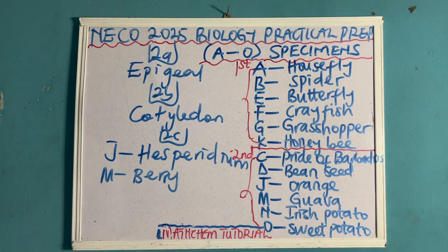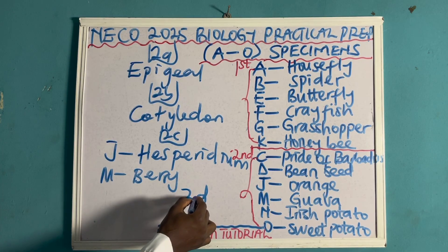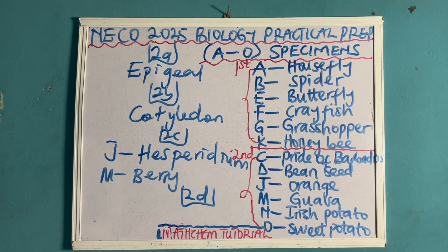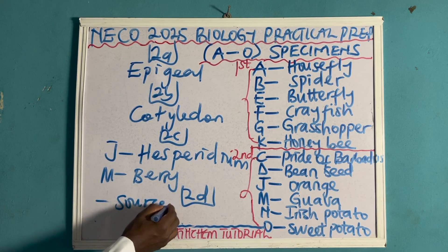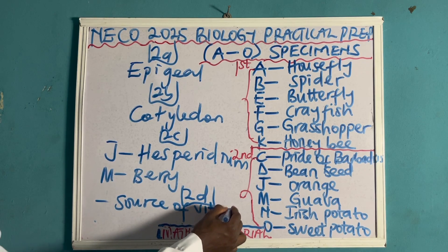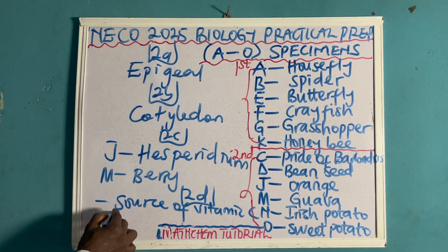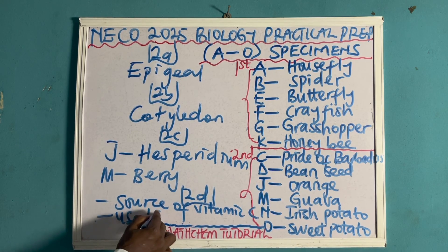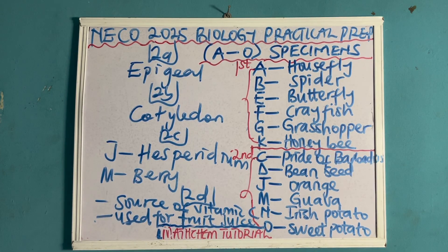Another question they can ask — let me name that 2D — is to state two uses of specimen J, the orange. One use is that it is a source of vitamin C. Everybody knows that you get vitamin C from an orange. The second use is that it is used for fruit juice production.